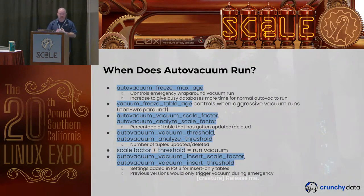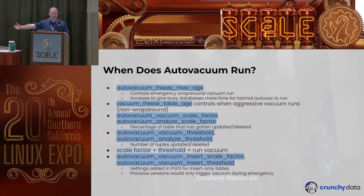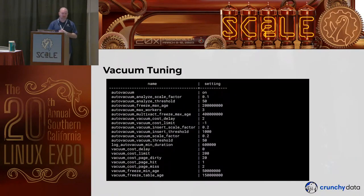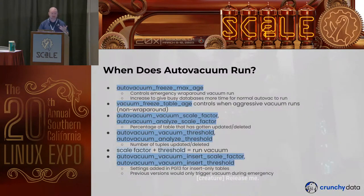What actually triggers auto vacuum to run? There's autovacuum_vacuum_scale_factor and autovacuum_analyze_scale_factor. When this percentage of the table has been updated or deleted, kick off a vacuum. The vacuum scale factor defaults to 0.2 — about 20% — meaning when 20% of the table has had updates or deletes, kick off an auto vacuum. For analyze it's down to 0.1, so about 10%, since you want analyze to run more frequently.